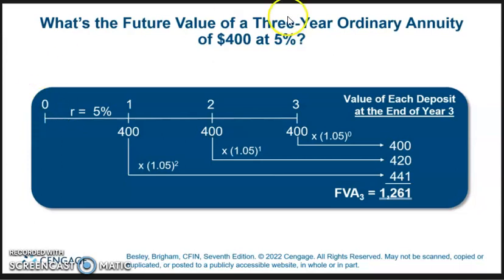The future value of an ordinary three-year annuity of $400 at 5%. With a timeline here, we've got payments at the end of the period. Year three is two years in the future, so it's 400 times one plus the rate of 1.05, and we square it because it's two years in the future. The second year, we only have one year of interest to add, so that's 400 times 1.05.